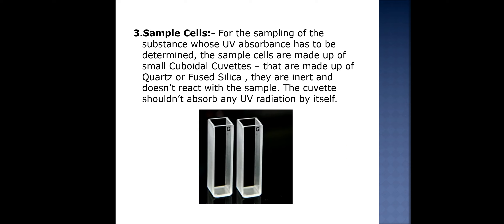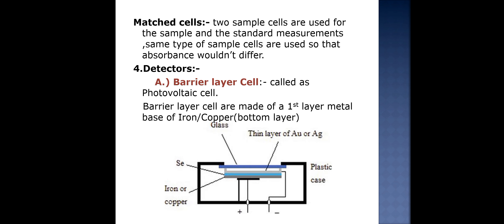The third instrument is the sample cell, used for sampling the substance whose UV absorbance has to be determined. Sample cells are small cuboidal cuvettes made of quartz or fused silica. They should be inert, must not react with the sample, and should not absorb any UV radiation themselves. Matched cells are used in double beam spectrophotometers where standard and test samples are studied, so that absorbance does not differ between the standard and the test.